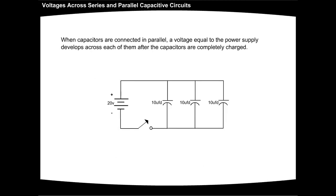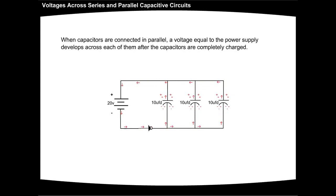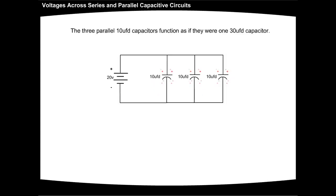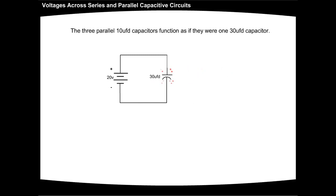When capacitors are connected in parallel, a voltage equal to the power supply develops across each of them after the capacitors are completely charged. The three parallel 10 microfarad capacitors function as if they were one 30 microfarad capacitor.